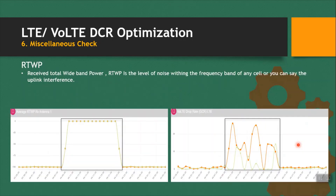RTWP means receive total wideband power, which generally shows interference — it is the level of noise within the frequency band of a cell, or uplink interference. Earlier the RTWP value for antenna 1 was minus 100 dBm, and it came up to near 0. At the same time, VOLTE drop rate increased from 1% to nearby 10 to 20%. This impacts multiple KPIs like throughput, access failure, and drop. Here we're focusing on drop call optimization.